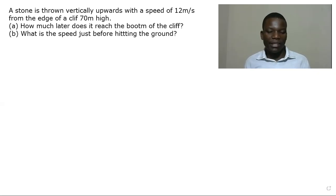So a stone is thrown vertically upward with a speed of 12 meters per second from the edge of a cliff. It's 20 meters high. Question A asks how much later does it reach the bottom of the cliff? And question B asks what is the speed just before hitting the ground?